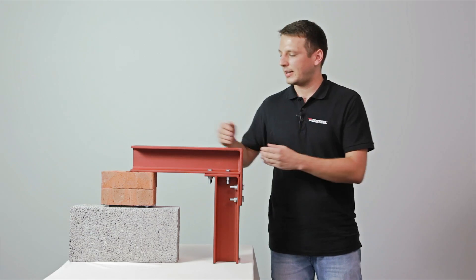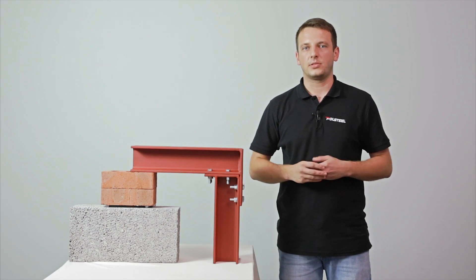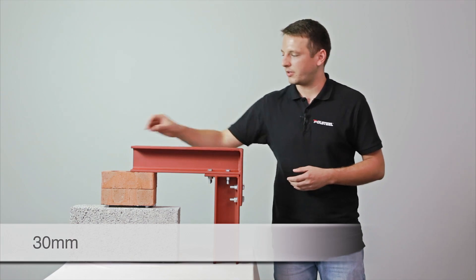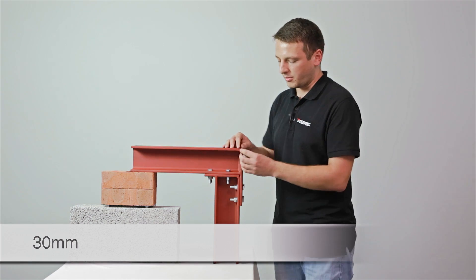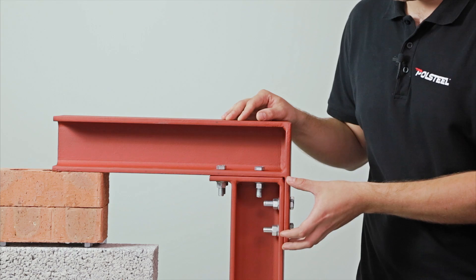When measuring the entire width of the structure, it's important to add an additional 30 millimeters on each of the connections in order to compensate for the thickness of the plate as well as the bolt head.